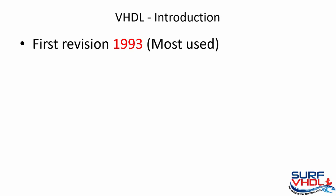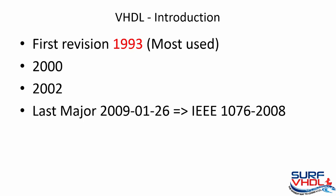The 1993 version is probably the most widely used with the greatest vendor tool support. Two minor revisions were released in 2000 and 2002, introducing the use of protected types and relaxing the rules related to ports. A major revision was released in 2009 introducing the use of external names, very useful in test bench design.